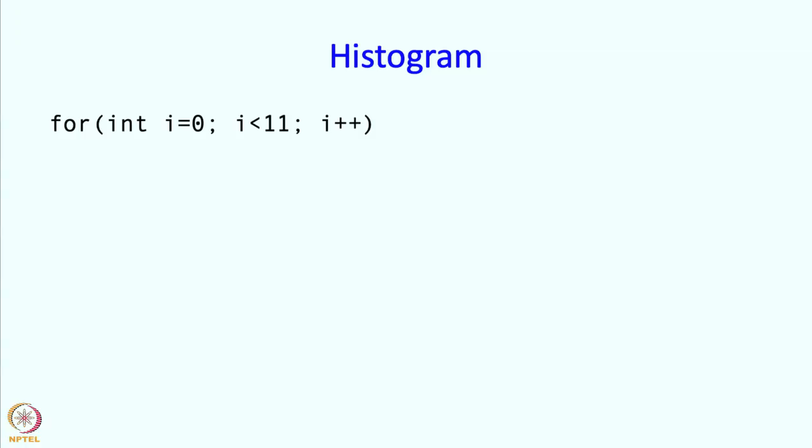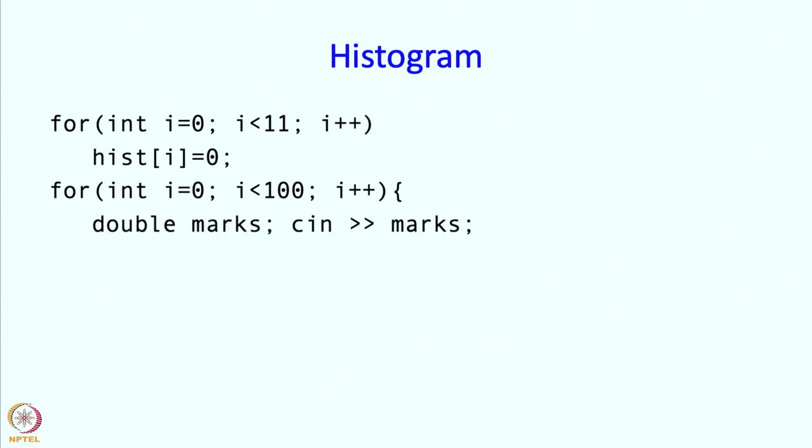Our program starts with 11 buckets, so we make all those buckets be 0. At this point we have not read any marks, and therefore all the ranges contain 0. Now we are going to read one mark after another, and when we read a mark, we figure out which bucket we should increment and increment it.